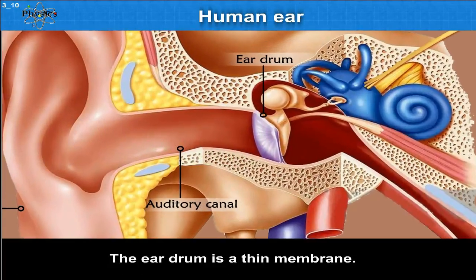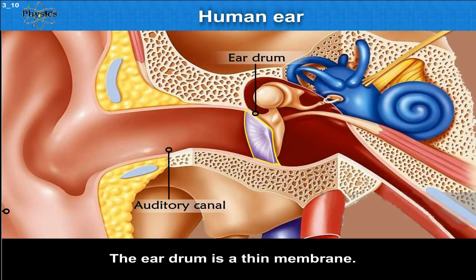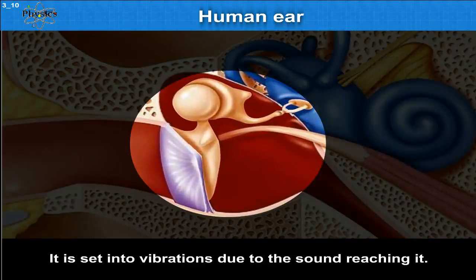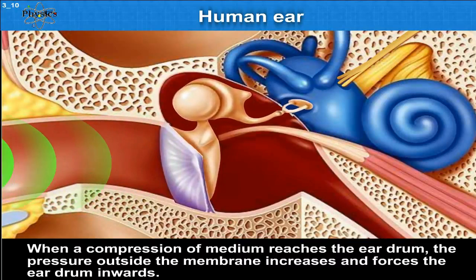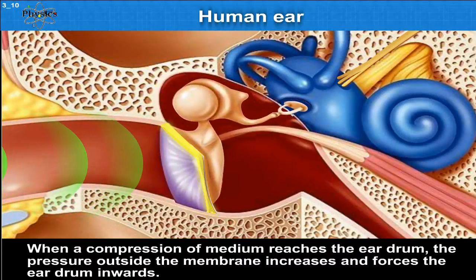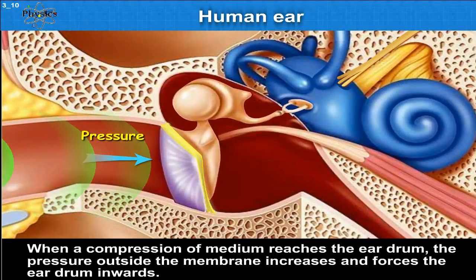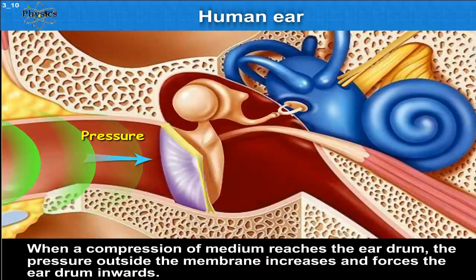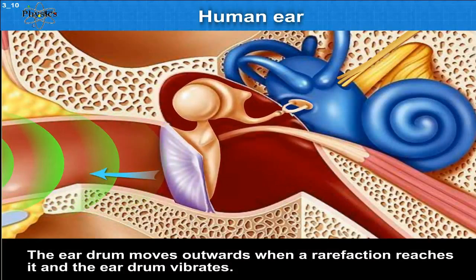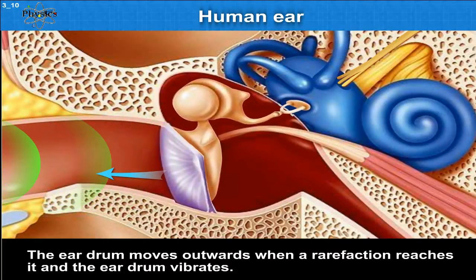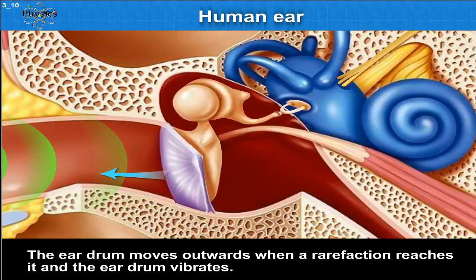The eardrum is a thin membrane. It is set into vibrations due to the sound reaching it. When a compression of the medium reaches the eardrum, the pressure outside the membrane increases and forces the eardrum inwards. The eardrum moves outwards when a rarefaction reaches it, and the eardrum vibrates.